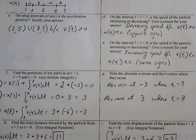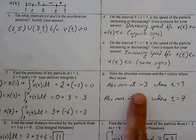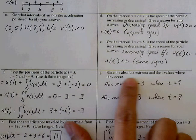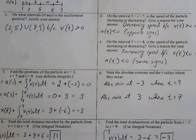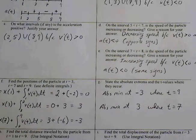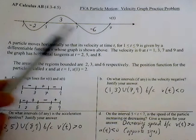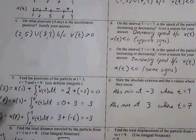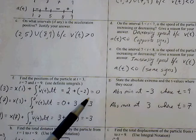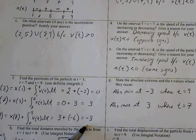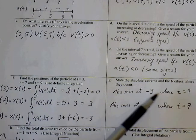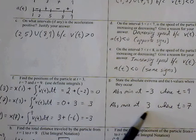State the absolute extrema and key values where they occur. This is an extreme value theorem application where our absolute extrema will occur at our endpoints or our critical points. Our endpoints are 1 and 9, our critical points are 3 and 7. We know x of 1 is 2, x of 3 is 0, x of 7 is 3, x of 9 is negative 3. So we see the smallest value is negative 3, so absolute min at negative 3 where t equals 9. And absolute max will occur at 3 where t equals 7.